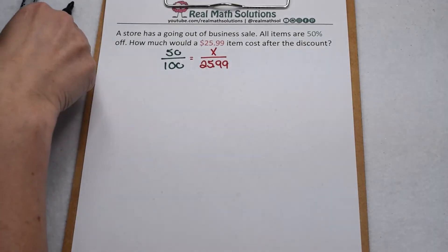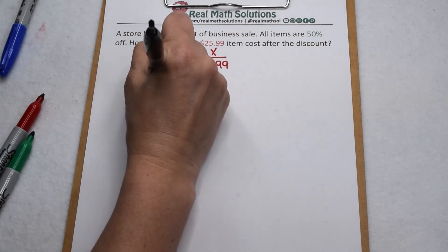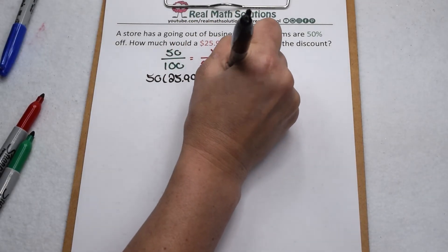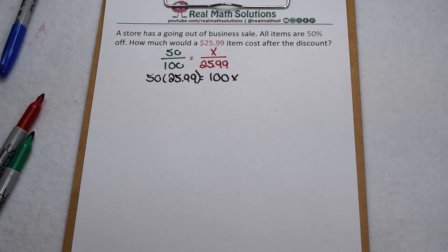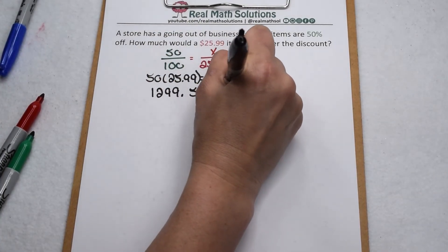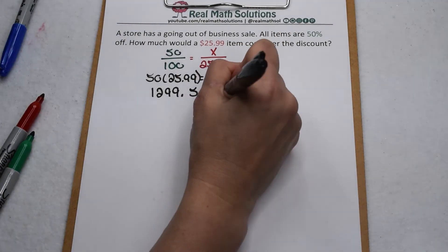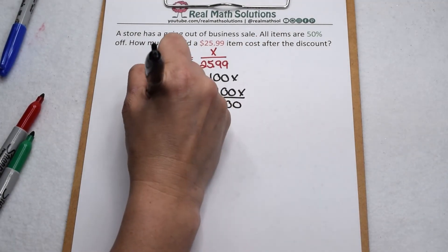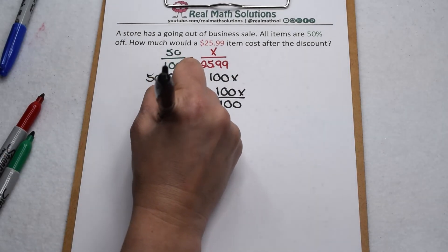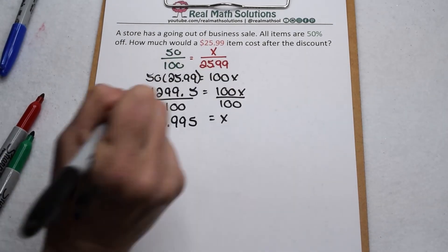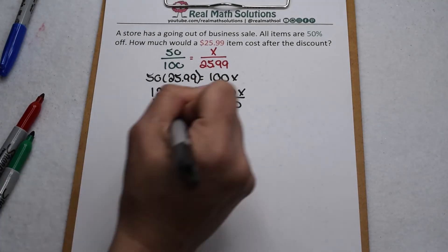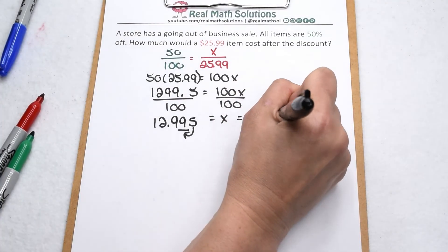So now we can use cross products. That means we're going to have 50 times $25.99 and we're going to have 100 times x. When I multiply 50 times $25.99, that comes out to give me 1299.5 and then I'm going to undo my multiplication with division. We're going to divide both sides by 100. When we divide 1299.5 by 100, that comes out to give us 12.995. Now this is money so that means we're going to have to round off to that nearest penny.